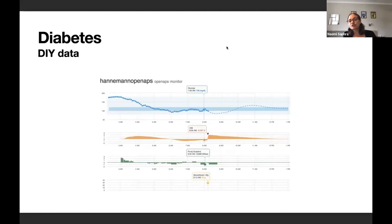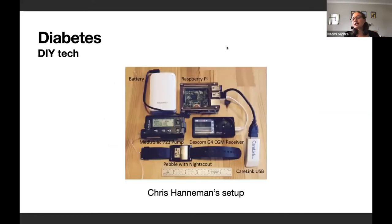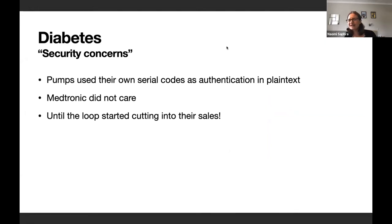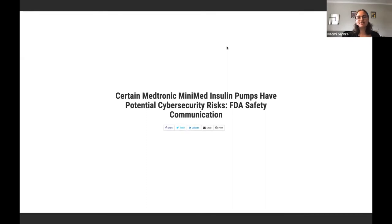The holy grail, if you're a diabetic, would be an artificial pancreas, a system that monitors your blood sugar and has its own internal heuristics that are personalized to your body to inject insulin. Or at least when you measure your blood sugar, it would automatically respond appropriately with those heuristics. That was the idea behind the closed loop, a system developed by diabetics and their carers. They use the data from glucose monitors to build personal heuristics and they used standard medical pumps from Medtronics. The authentication code was the six digit serial number of the device in plain text. It was publicly known since 2011, but Medtronic just didn't really care until it started cutting into their profits.